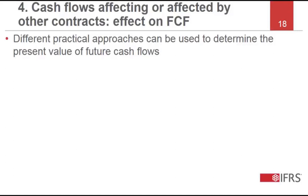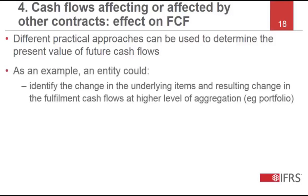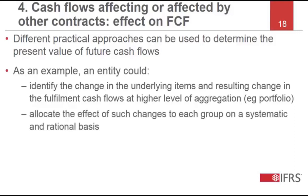IFRS 17 does not mandate the approach to be used to determine the fulfilment cash flows of groups of contracts that affect or are affected by cash flows to policyholders of contracts in other groups. Different practical approaches can be used. In some cases, an entity may be able to identify the change in the underlying items and resulting change in the cash flows only at a higher level of aggregation than the groups. In such cases, the entity shall allocate the effect of the change in the underlying items to each group on a systematic and rational basis.